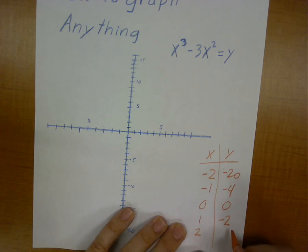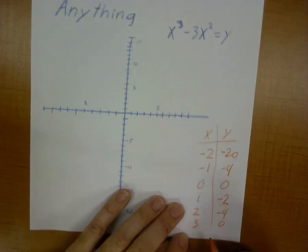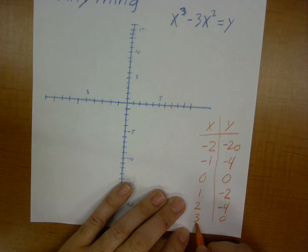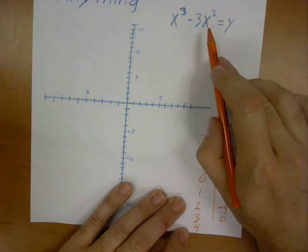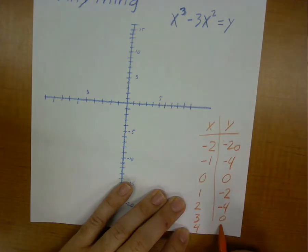And however many values you need really depends on your equation. You have to simply have enough so that you can see what you're doing. I can get one more point in here, let's see. If I plug 4 into here, I get 16 out.